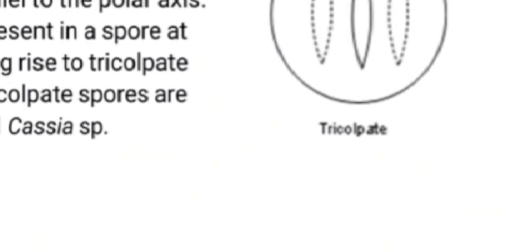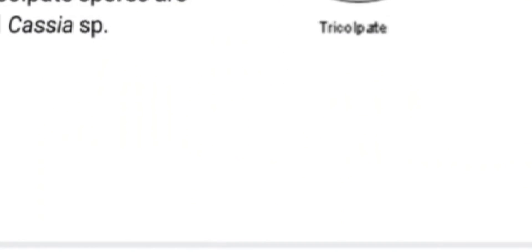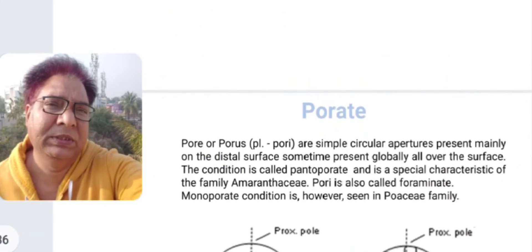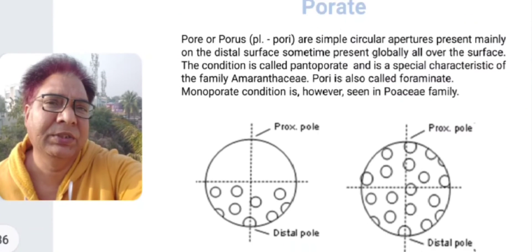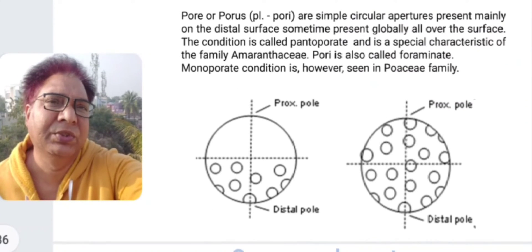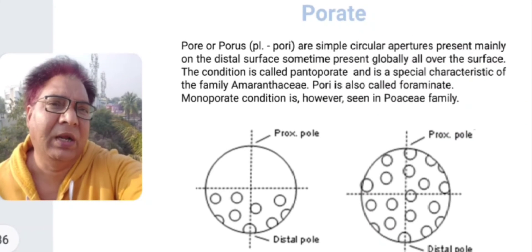The tricolpate condition is most common in angiosperms and is found in Saraca indica, Cassia species, and others.